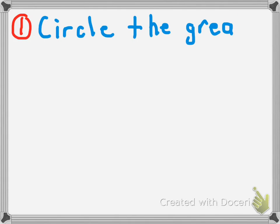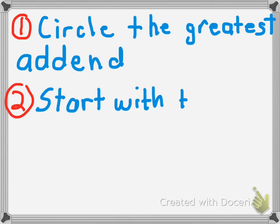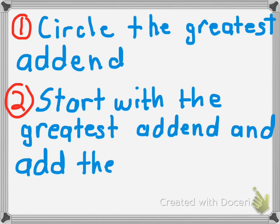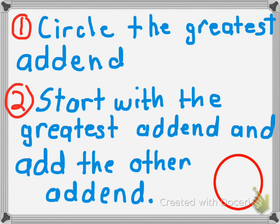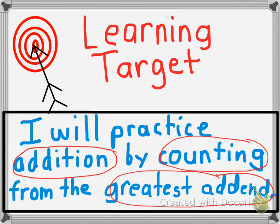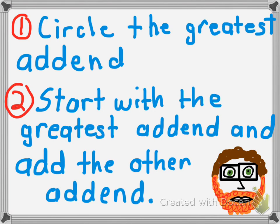Great job! Remember what we did today — we followed two steps. First, we circled the greatest addend. Then we started with the greatest addend and added the other addend. This was made by me, Mr. C. I hope this helped you understand our goal of today, which was practicing addition by counting from the greatest addend. Thank you very much — I hope you enjoyed this lesson. I'll see you later, bye-bye.